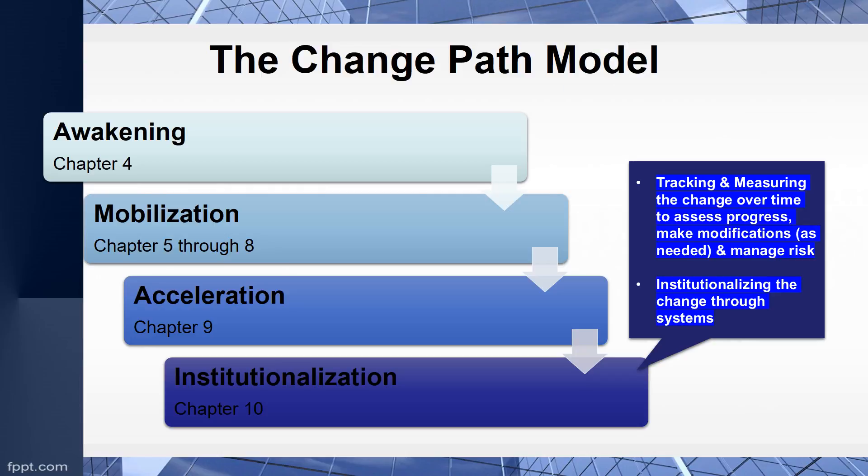Throughout the course, we have looked at the change path model, and the final step of this path is institutionalization. So we're tracking and measuring the change process over time to assess progress, make modifications as needed, and manage risk. It's a continual improvement — you're constantly looking and assessing, and it's important for change leaders to have the skill to be able to analyze. It's actually a critical skill.